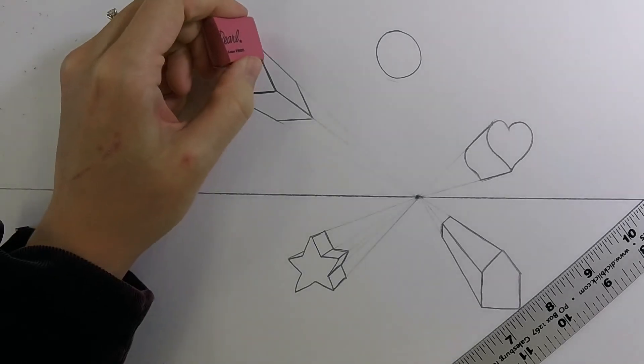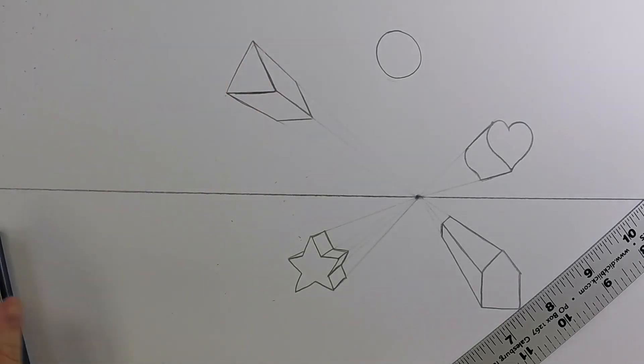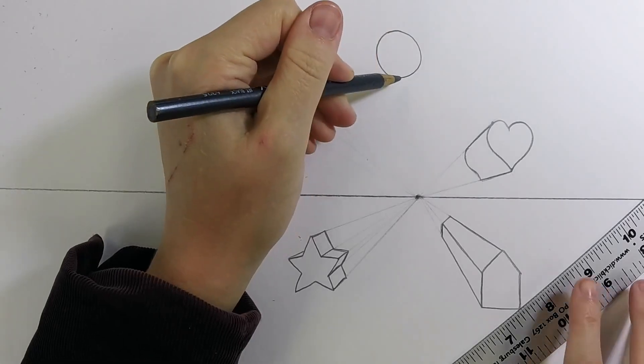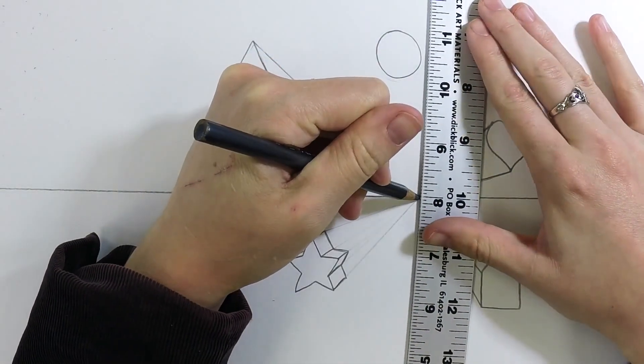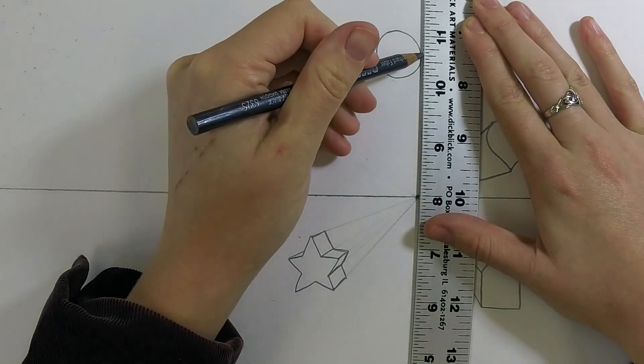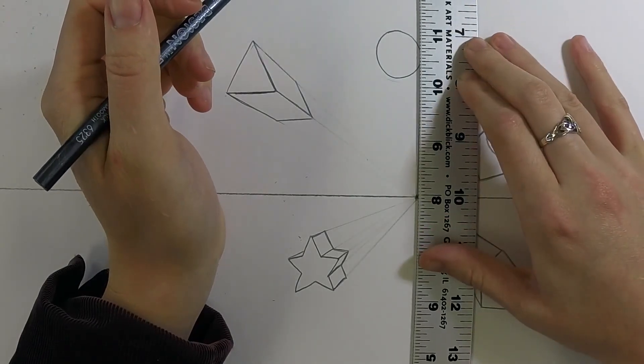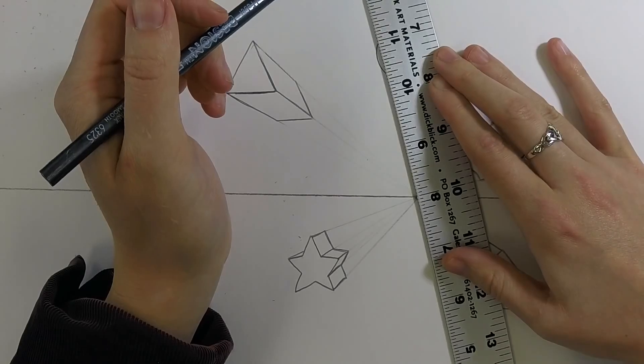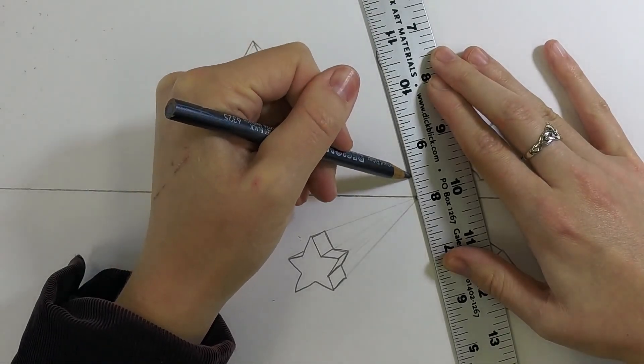Next up, we have the circle. And just like the heart, we're going to be lining up the edges, so to speak, by starting at the vanishing point and sliding our ruler until it just touches the side of the circle. So it doesn't go through it, just brushes the side. And then we'll do the same on the other side.